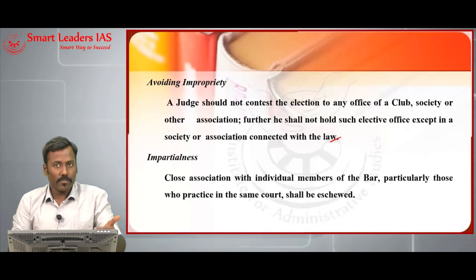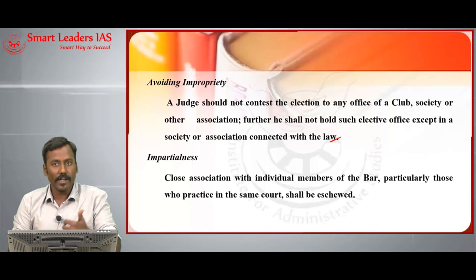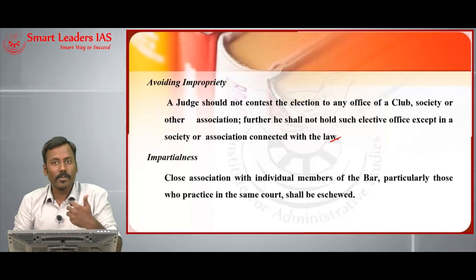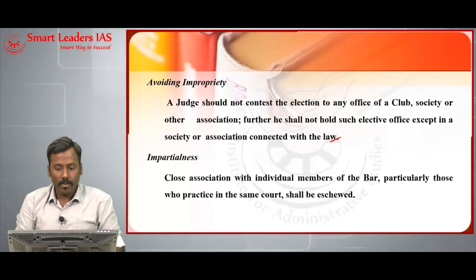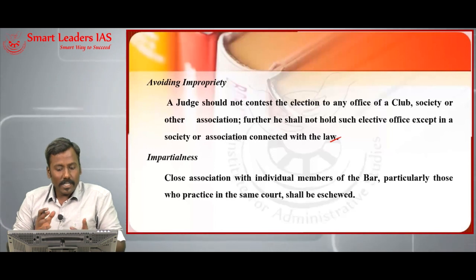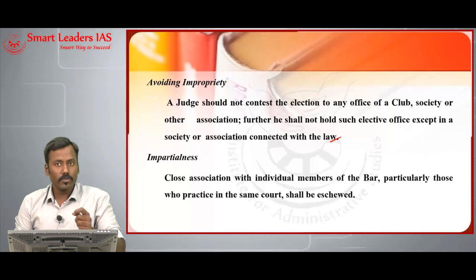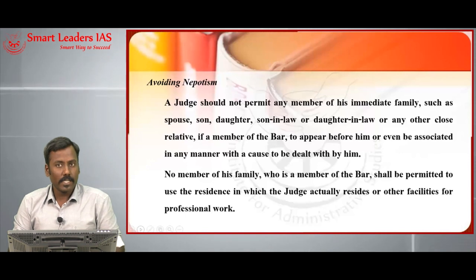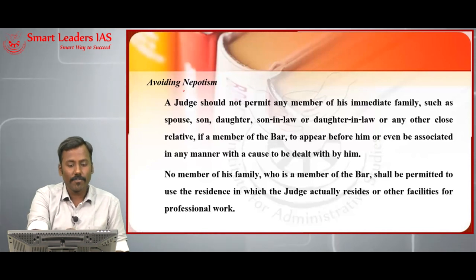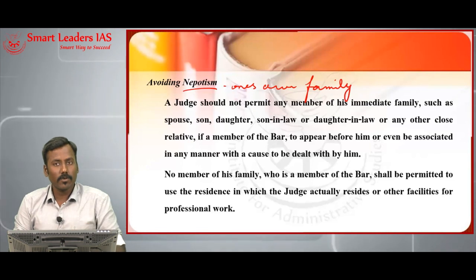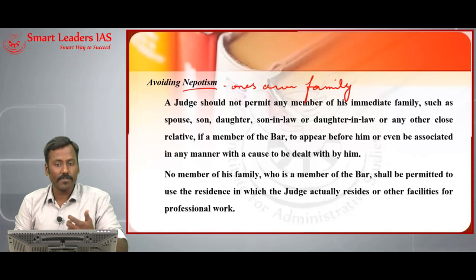The aspect of impartialness also relates to colleagues, family, and friends. Since judges were formerly advocates, they may have good rapport with practicing lawyers. The charter states that judges should avoid close association with individual members of the bar, particularly those who practice in their own court. Regarding nepotism — favoring one's own family — a judge should not allow any close family member to practice in the court where he is officiating, nor should a practicing family member stay in the judge's official residence.